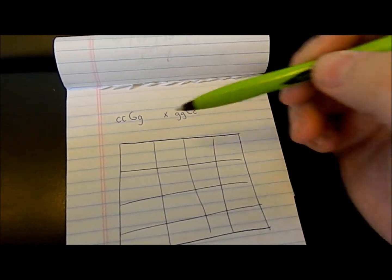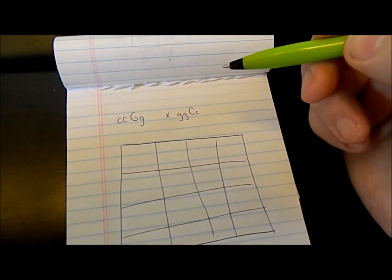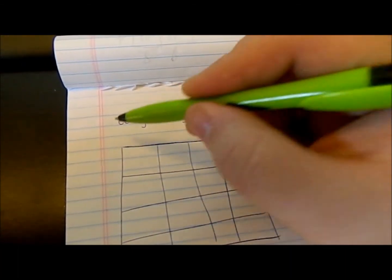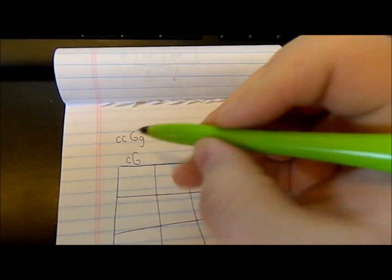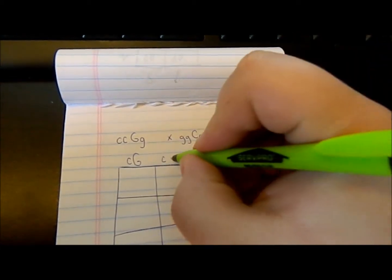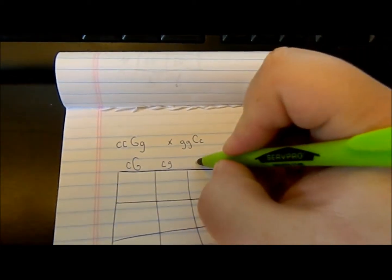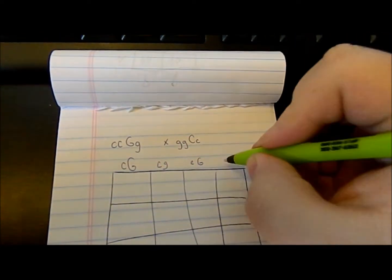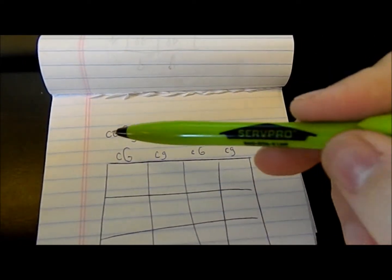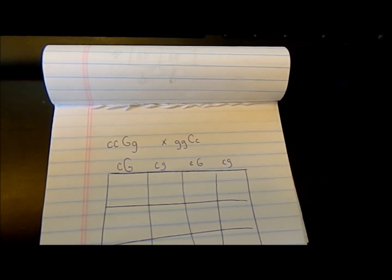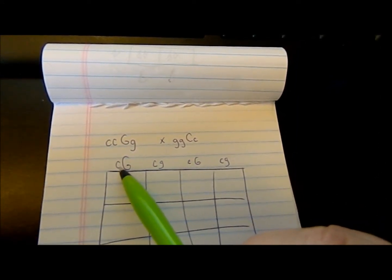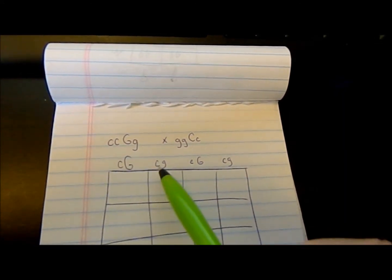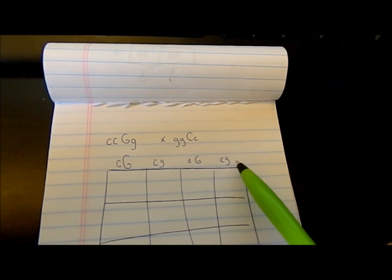To figure out what the animal could pass on, you simply do this. This one's going to be on top, this one's going to be on the side. You take a little c — because it can pass the little c on — and the big G. Then the little c again and the little g. Then the next c: little c big G, and little c little g. That's what this animal will be able to pass on — either just a caramel gene, one copy of it, or a caramel and a ghost gene. That's what it can pass on because it's a caramel het ghost.